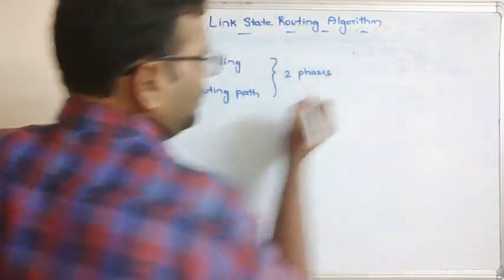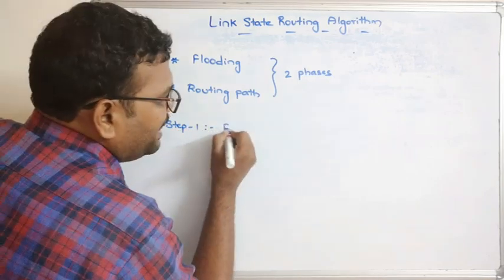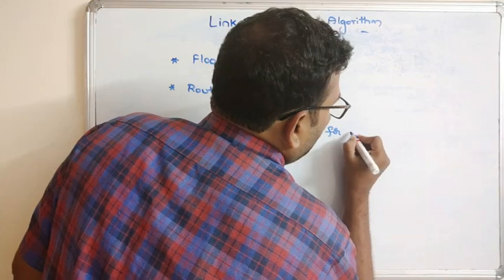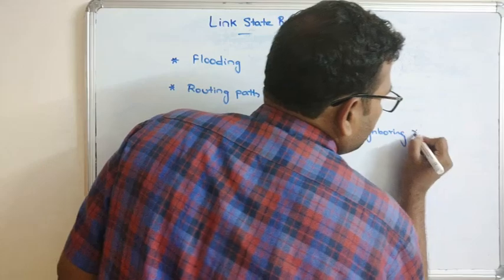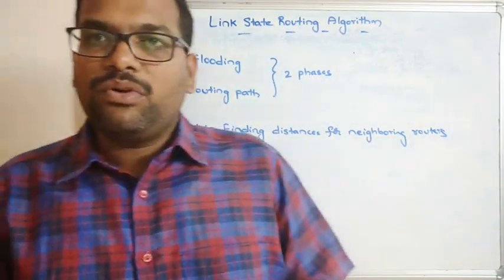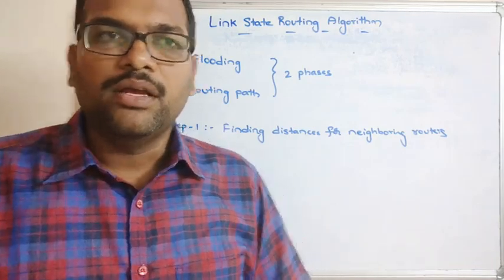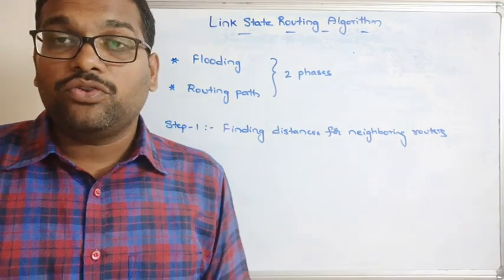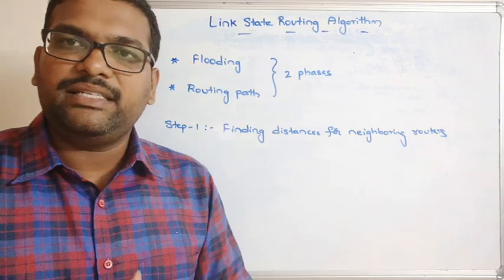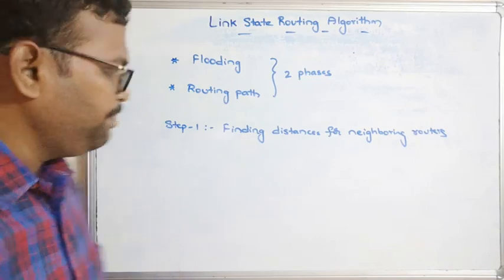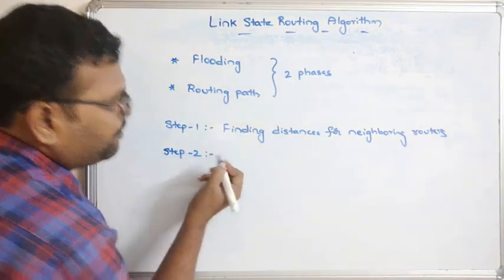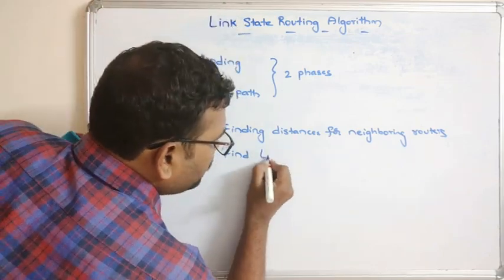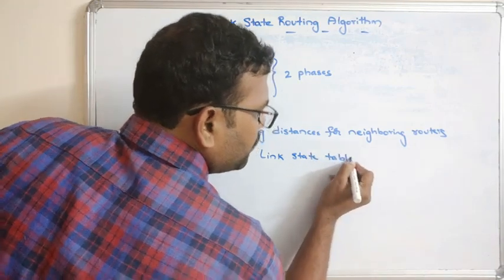The first step is finding distances for neighboring routers — routers which are directly connected. We have to find the distances by sending some hello packets to the neighboring routers. From that, it will find the complete distance of how long it is linked to the particular neighboring router. The step two: once we have the distances, find the link state table for every router.